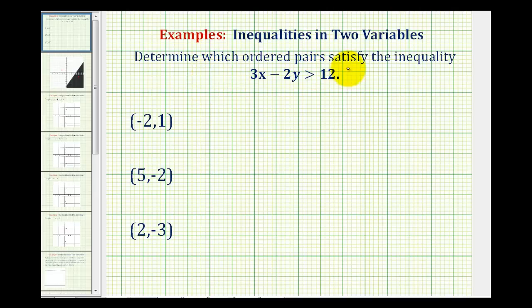We want to determine which ordered pairs satisfy the inequality 3x minus 2y is greater than 12. Each ordered pair consists of an x coordinate and a y coordinate. To determine if the ordered pair satisfies the inequality, we'll replace x with the x coordinate and y with the y coordinate, then see if the left side is greater than 12. If it is, it satisfies the inequality; if not, it doesn't.